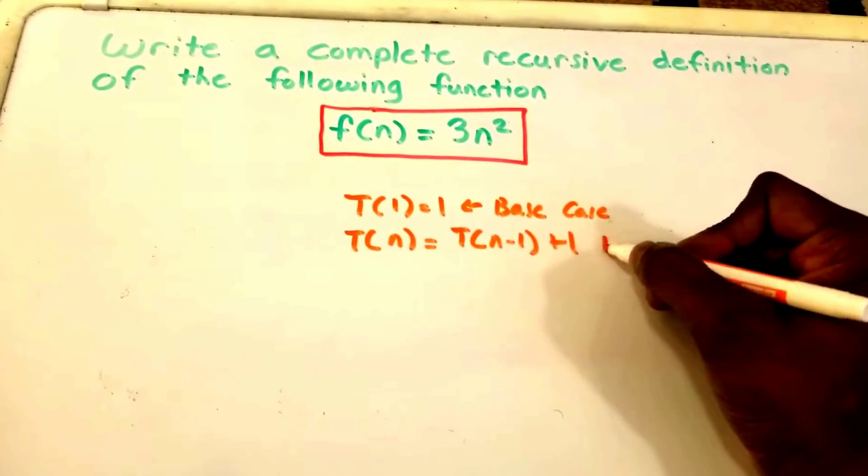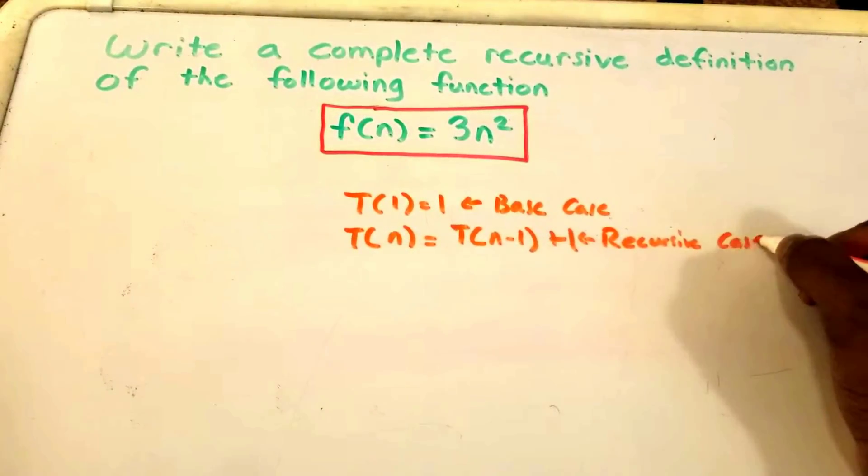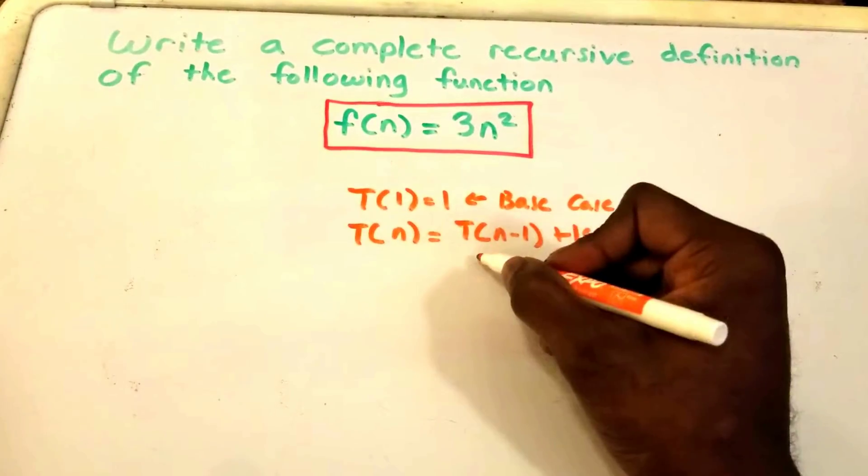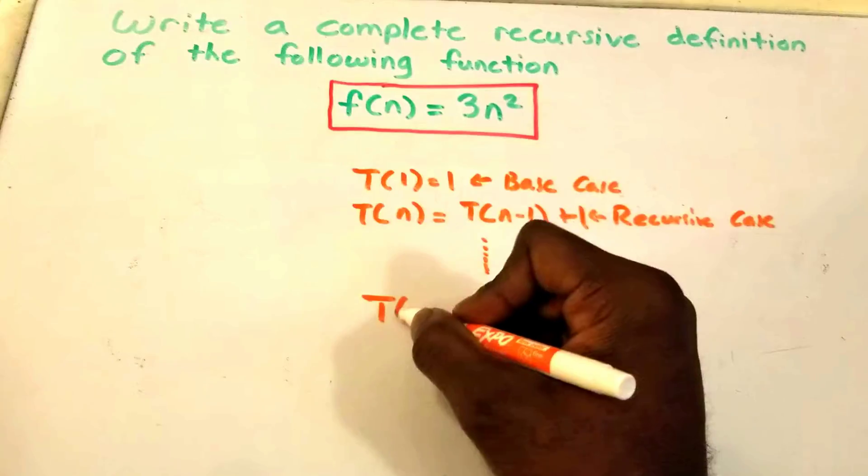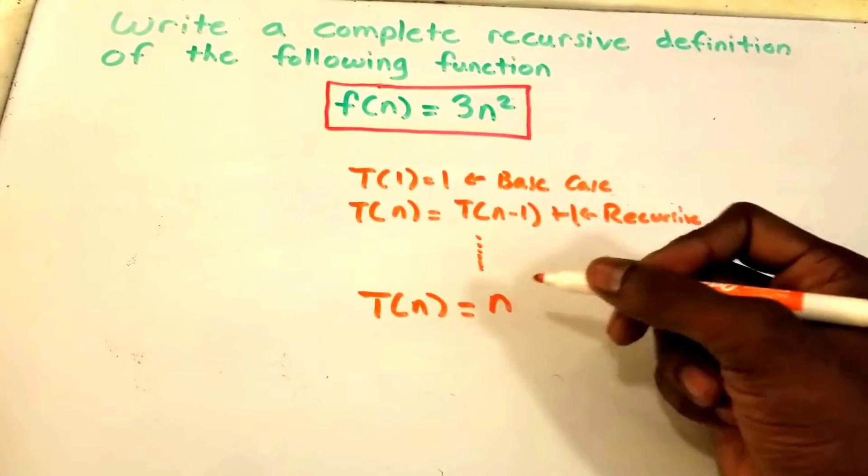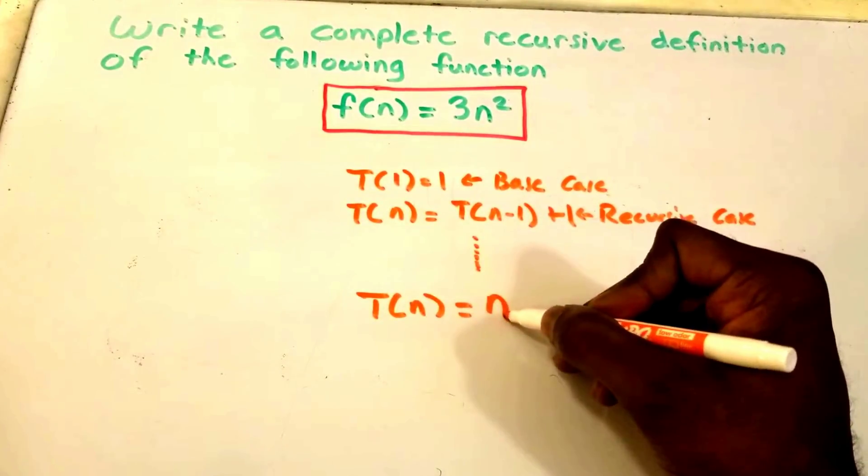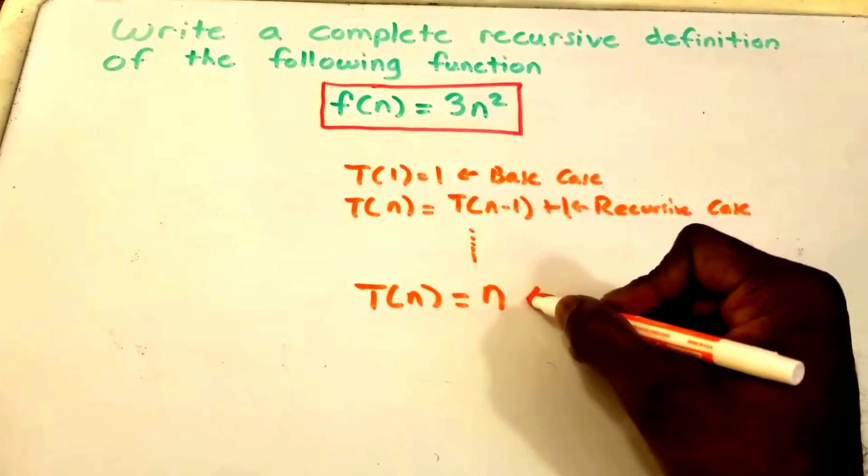And then what we do is a bunch of steps in between here, and then we come up with the function. So we'll say t(n) would be equal to n, for example. But in this video we're starting off with our function, so this is our function.